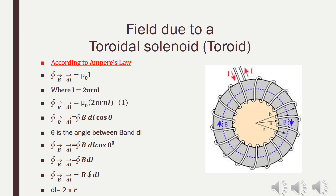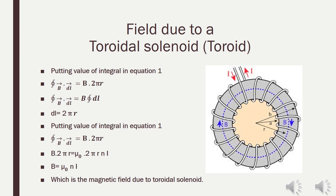For the left-hand side: the closed integral B·dL = B dL cos θ, where θ is the angle between B and dL. Since B and dL are in the same direction, θ = 0°, so cos 0° = 1. Therefore, the closed integral B·dL = B × closed integral dL = B × 2πr (the circumference). Equating both sides and simplifying: B = μ₀nI, which is the magnetic field strength of the toroidal solenoid.